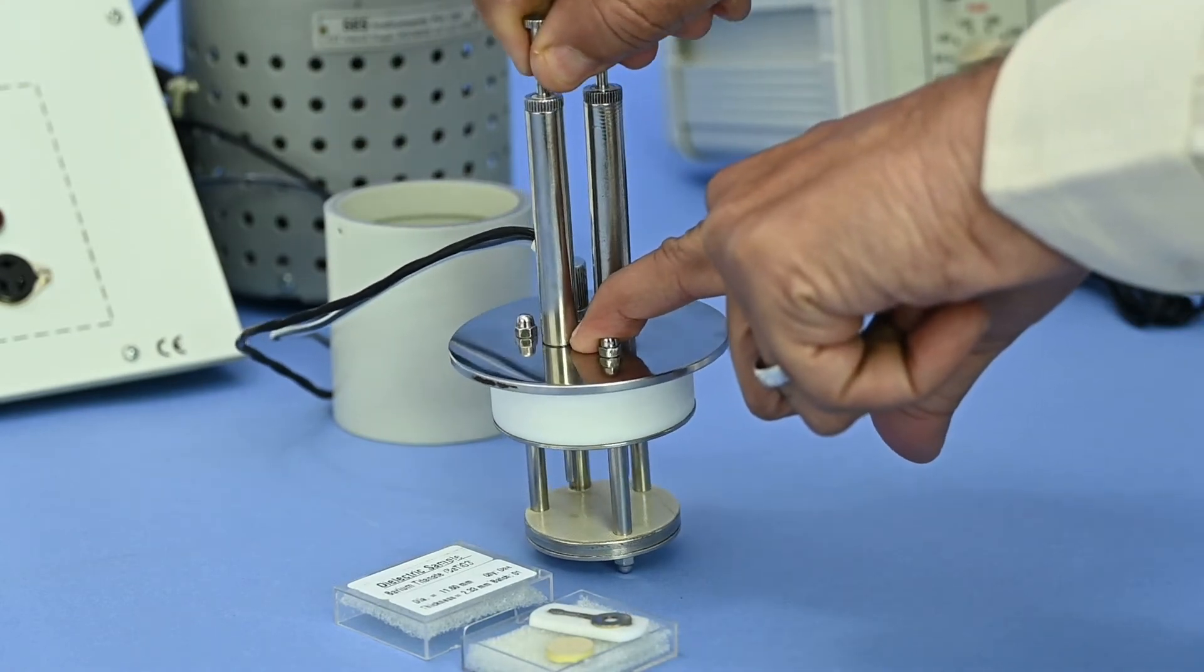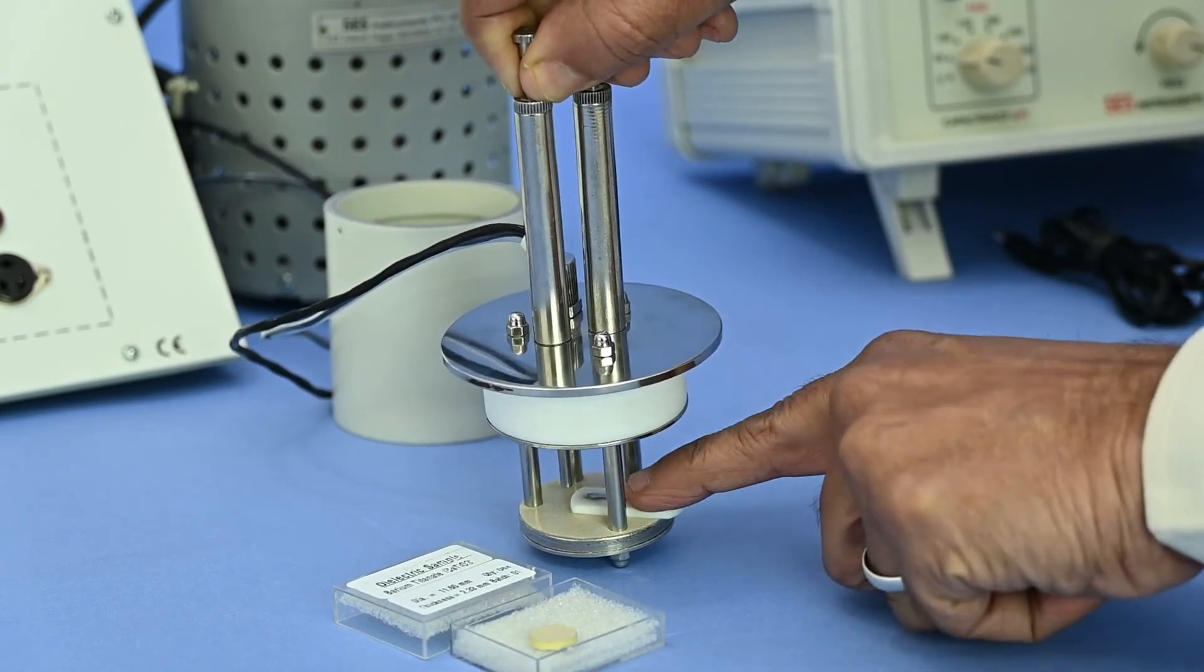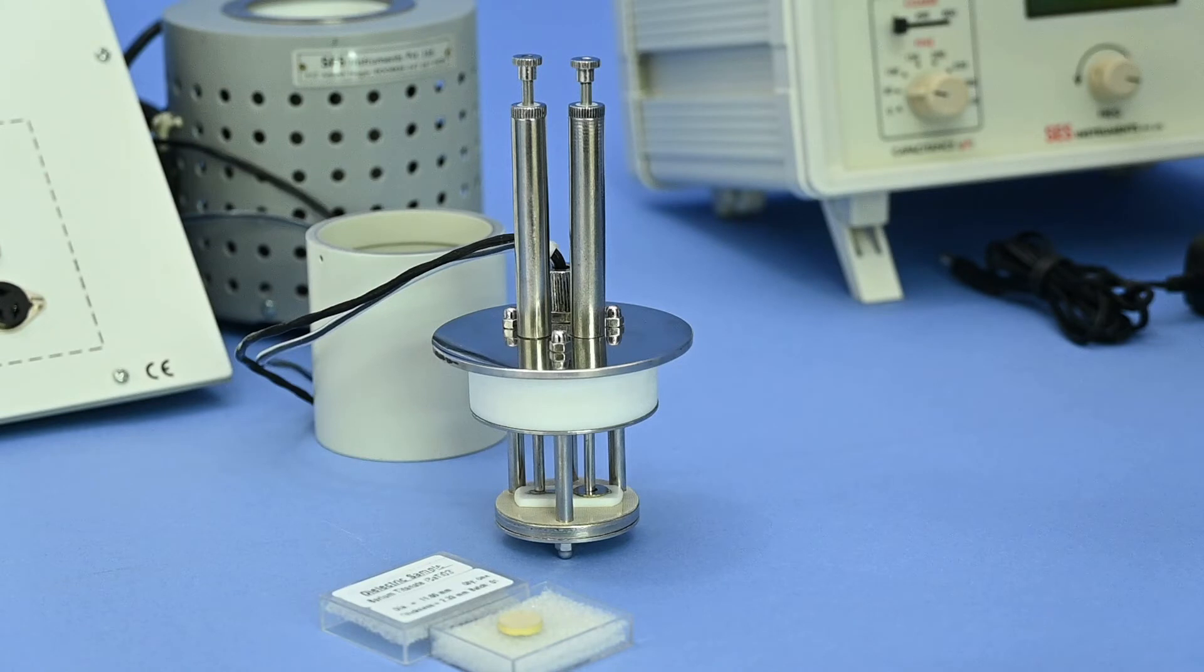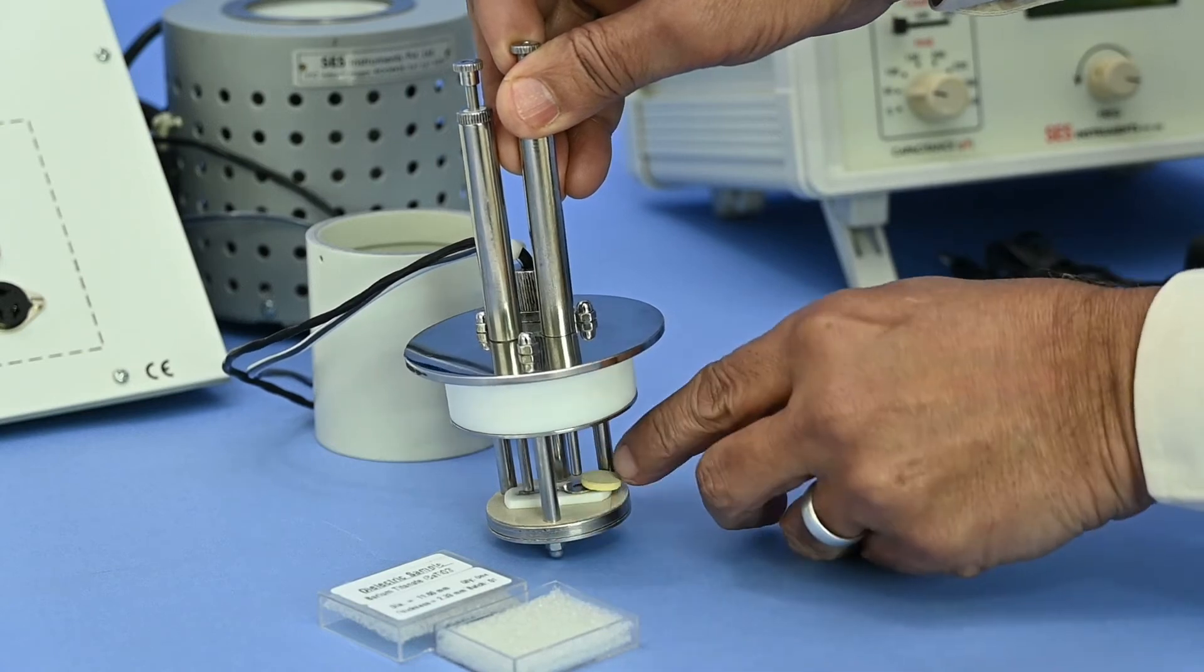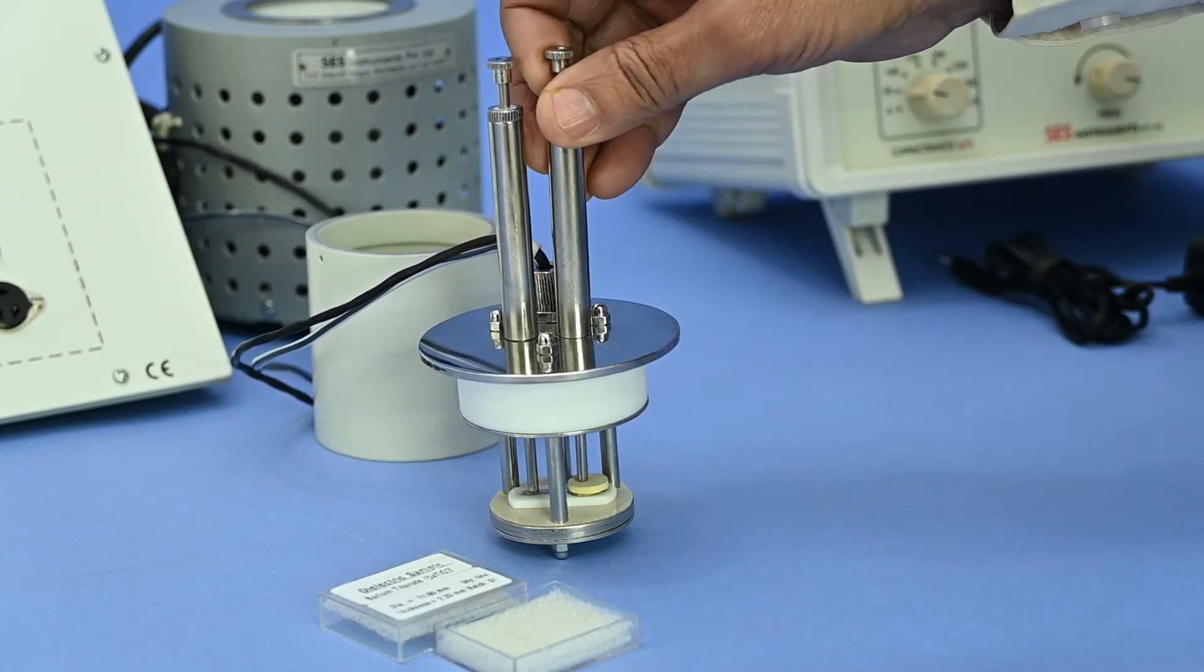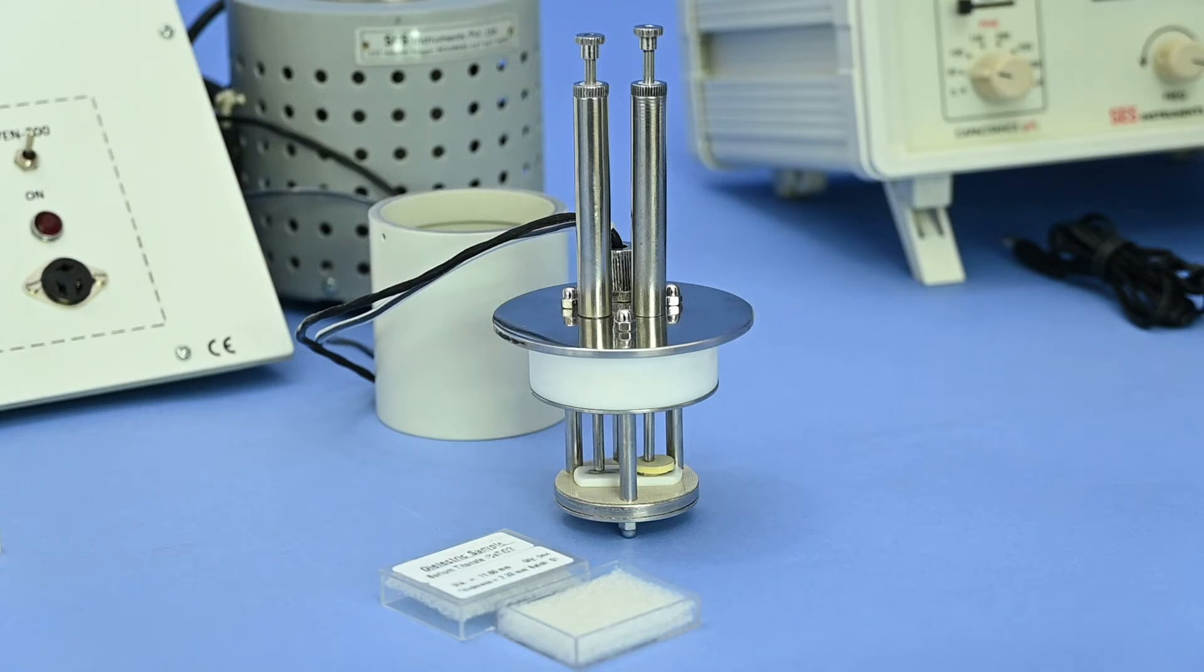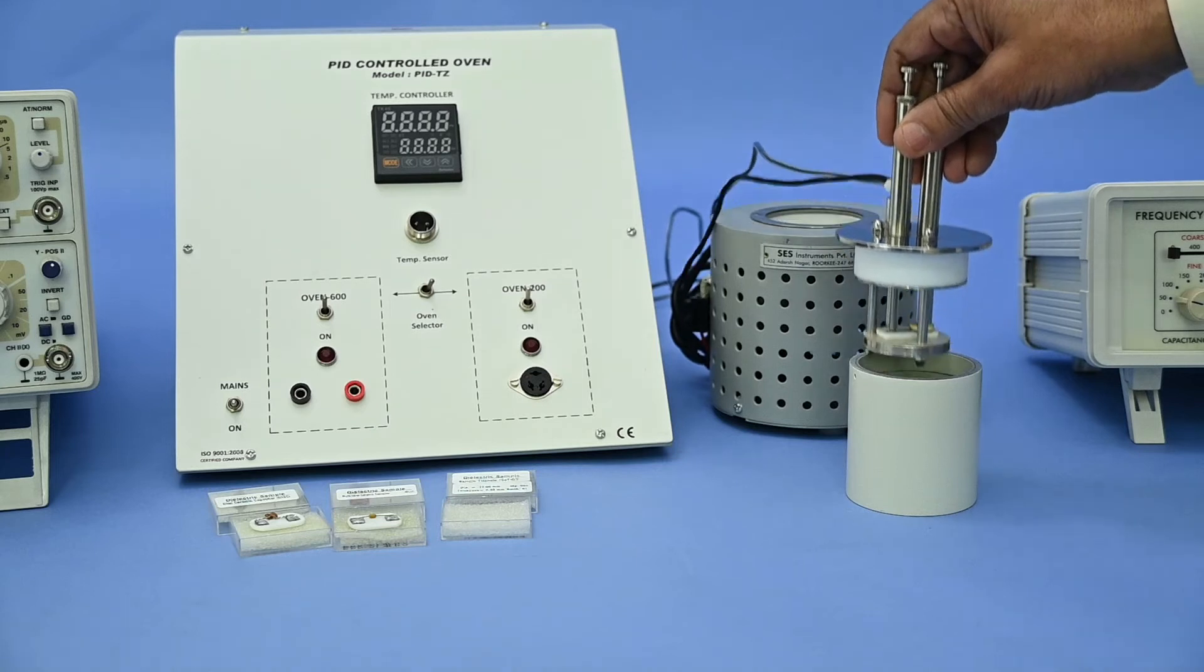Pull both spring-loaded probes upward and insert aluminum sheet and let them rest on it. Place the sample BaTiO3 on sheet with probe putting upward and rest on it very gently. Now, one probe would be in contact with the upper surface of the sample and other to the bottom with aluminum sheet. Similarly, we can change other samples. Place this arrangement inside the arrangement stand or oven.